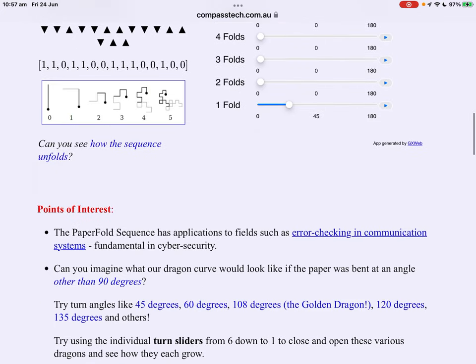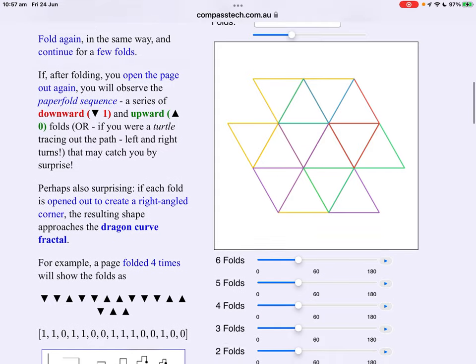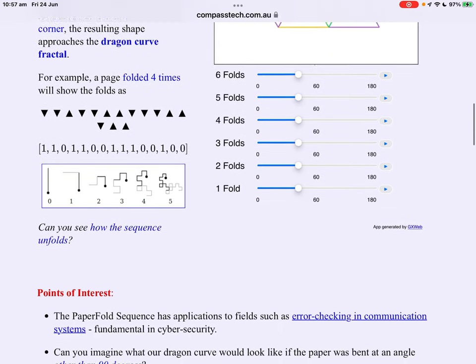Other angles of interest, 60 degrees. Suddenly our dragon curve becomes a much more symmetrical shape. Equilateral triangles, not surprisingly.